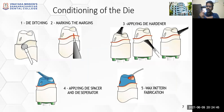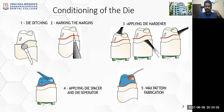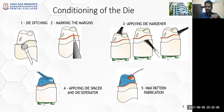A die means a single tooth of the cast — mainly the prepared tooth — so that we can work on it and do a wax pattern easily. It undergoes procedures like ditching of your die, marking the margins till where the finish line is, and applying die hardener, die spacer, and die separator. Afterwards we proceed for the process called wax pattern fabrication.